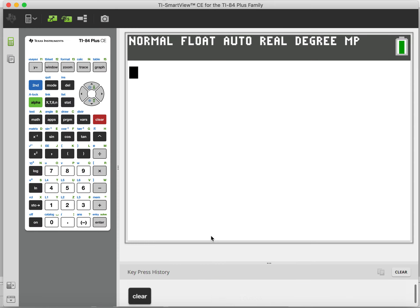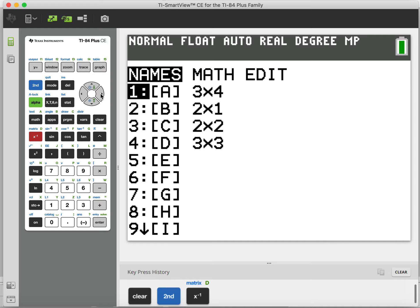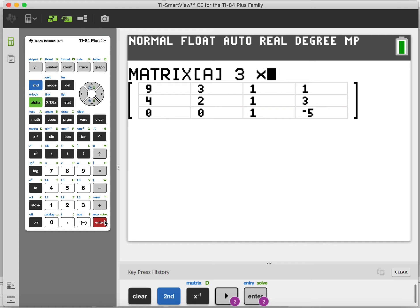So we are going to go to put in a matrix. You go second matrix. Matrix is located above x inverse or x to the negative one. So I hit matrix. Then you go over to edit and hit enter.